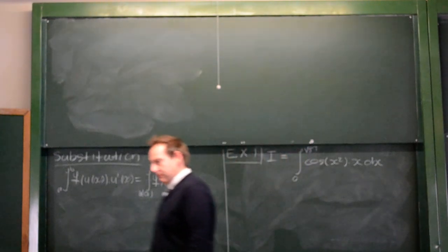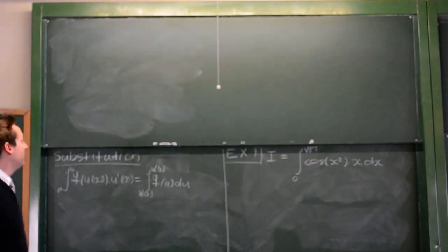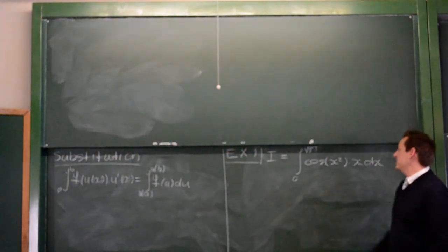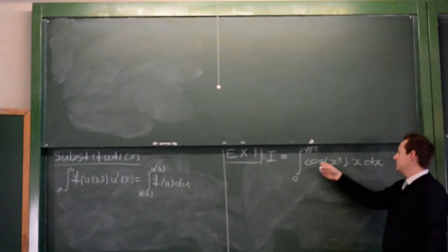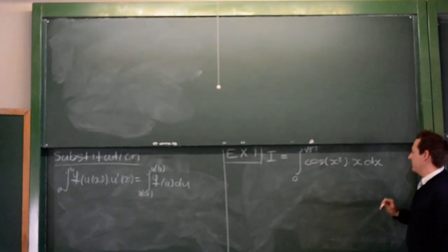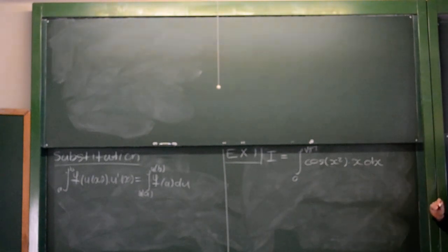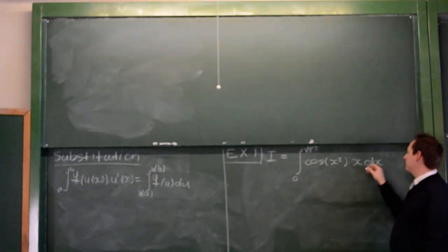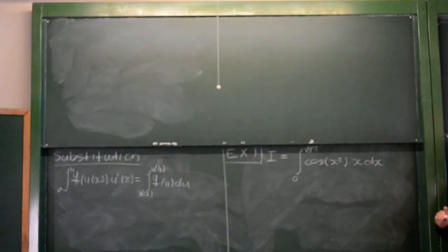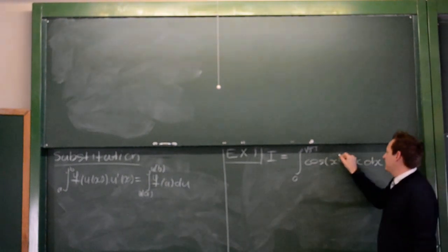What we have to do here is we have to decide, what are we going to pick as our u? Well, if we look at this integral, you see we have cos of x squared times x. So if you differentiate x squared, you get 2x. So, what we have here is more or less the derivative of the inner function here.